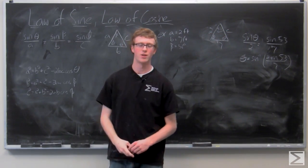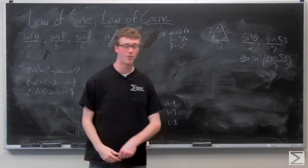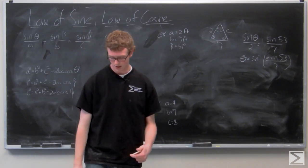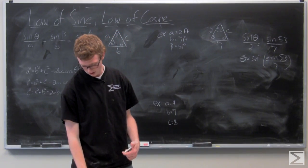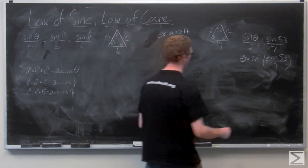Now you need your calculator to calculate both of those sines, sine of 53 and the inverse sine, and you get theta equals 13.2 degrees.